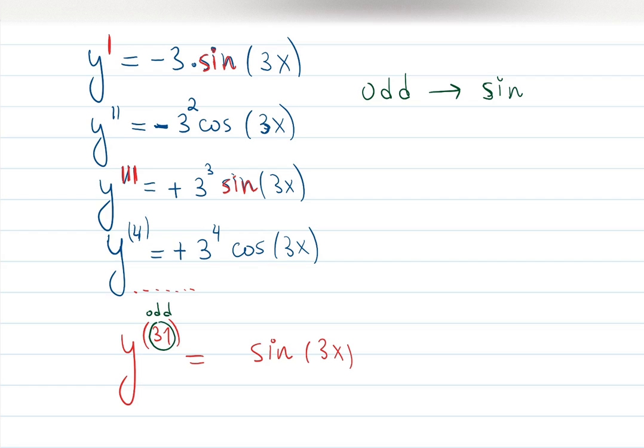Now we want to figure out what kind of number will be in front of sine. Well, the first derivative gave me 3 to the 1. The second derivative gave me 3 to the 2. Third one, 3 to the 3. Fourth derivative, 3 to the 4. And so on. The 31st derivative will give me, yes, you're correct, 3 raised to the 31.